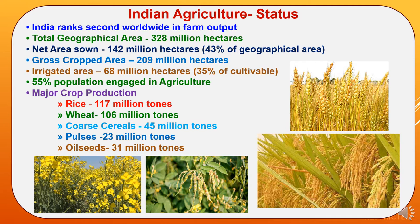55% of the population is engaged in agriculture. The production of rice is around 117 million tons, followed by wheat with 106 million tons. Coarse cereal production is 45 million tons, consisting of maize, sorghum, millets, and other millets. Pulses production is 23 million tons, with major contributions from gram, pigeon pea, green gram, and black gram. For oilseeds, India has total production of 31 million tons, with major crops being groundnut, mustard, and soybean.